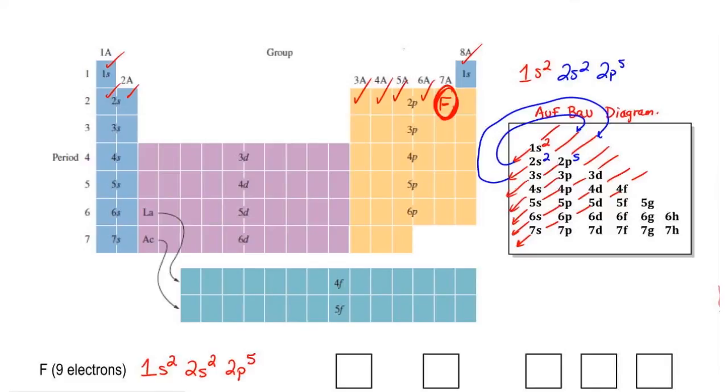And basically go 3s², if you were continuing, loop around, 3p⁶, 4s², loop around again. This is an older way to do the electron configuration of elements. I personally think that the periodic table way is much better. But if you're more accustomed to the Aufbau diagram, that's up to you.